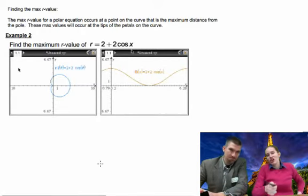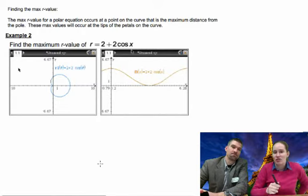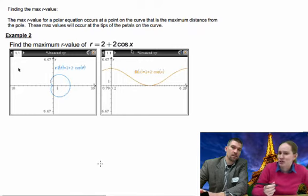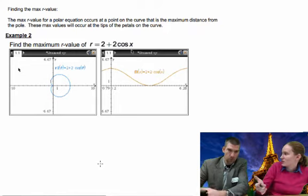Find the max R value. So, the max R value, that's like a range kind of situation, right? But for polar graphs, since we have R's and Theta's, it's a little different.